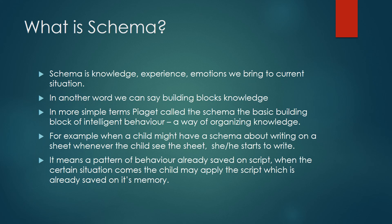For example, when a child has a schema about writing on a sheet, whenever the child sees the sheet, they start to write. That is the schema. Similarly, whenever you go to the pub, you start to play because you already know what to do there. Or when you go to a restaurant, you already have saved some information before you visit. These are schemas. This schema script is saved in each person's memory, and they will apply it when the situation arises — a pattern of behavior already saved as a script.